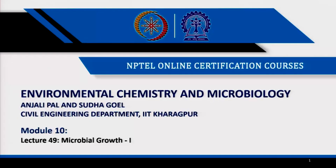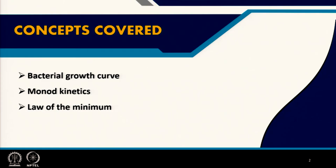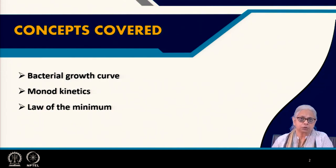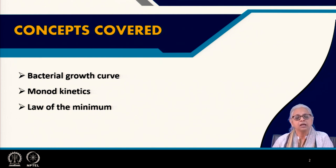Welcome everyone to the next module. This is module 10 and the first 3 lectures are going to cover issues related to microbial growth. Today's topic is lecture 49 and the first part of microbial growth. The topics we are going to cover are the general bacterial growth curve, deriving Monod kinetics both mathematically and experimentally, and the last part is the law of the minimum.